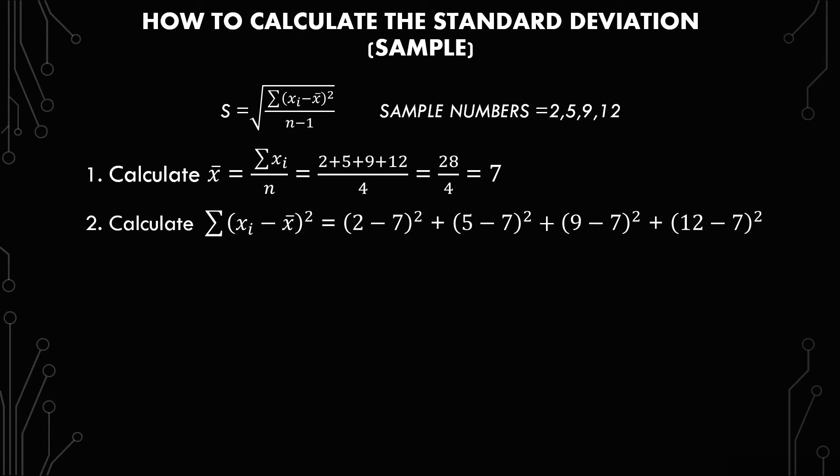The next thing to calculate, probably the hardest part in this entire process, is the summation of each x minus x-bar squared. So we get each one of our numbers, 2, 5, 9, and 12, and we subtract x-bar from each of them individually and then add them up. So we have 2 minus 7 squared plus 5 minus 7 squared plus 9 minus 7 squared plus 12 minus 7 squared.